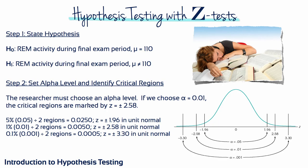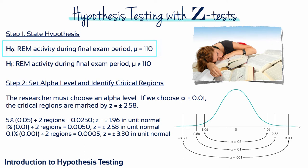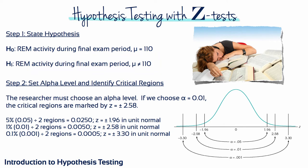Step 1: State the hypotheses. The null hypothesis says that REM activity during the final exam period has a mean of 110 — in other words, preparing for final exams has no effect on the amount of REM activity. Whereas the alternative hypothesis says that REM activity during the final exam period is not equal to 110. Maybe it's higher, maybe it's lower. Step 2: The researcher must choose an alpha level. If we choose an alpha of 1%, then our critical regions are marked by the z-score boundaries of plus or minus 2.58.